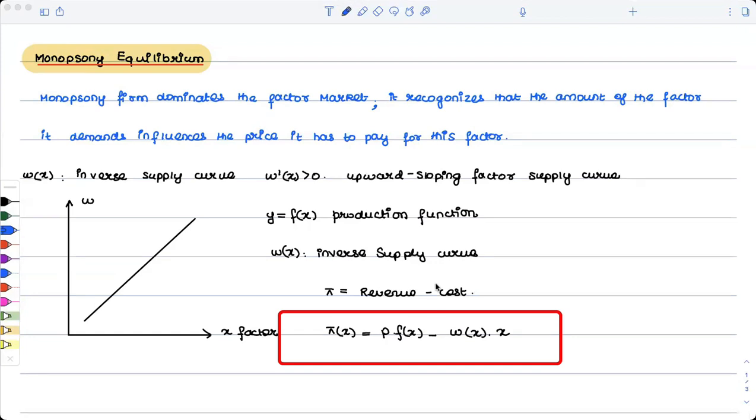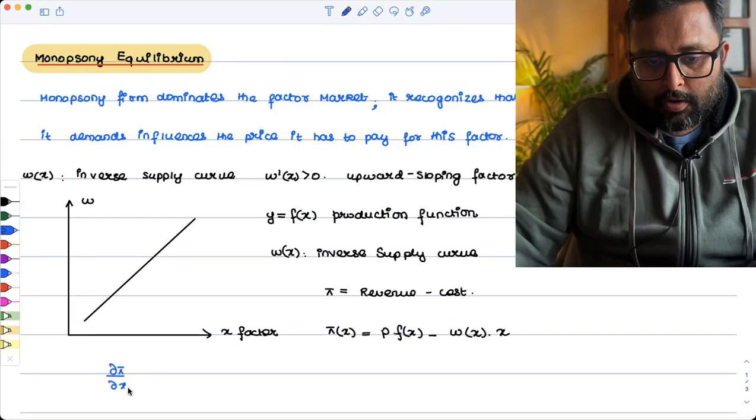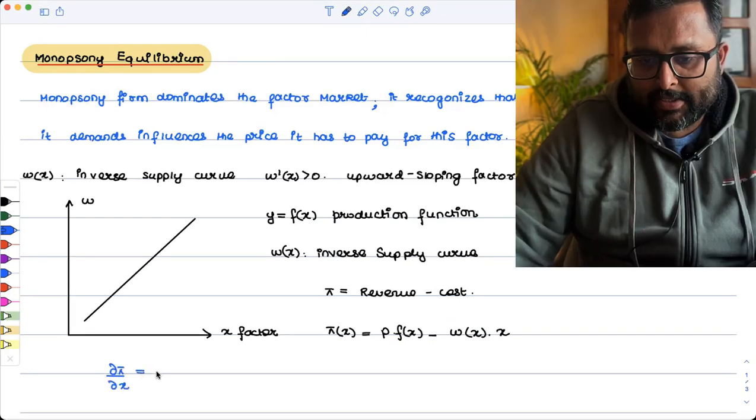Pi is equal to revenue minus cost. Profit is equal to revenue minus cost. What is my profit? Profit is P into output minus input price into input, the amount of inputs which you are going to use. What level of input is going to maximize my profit?